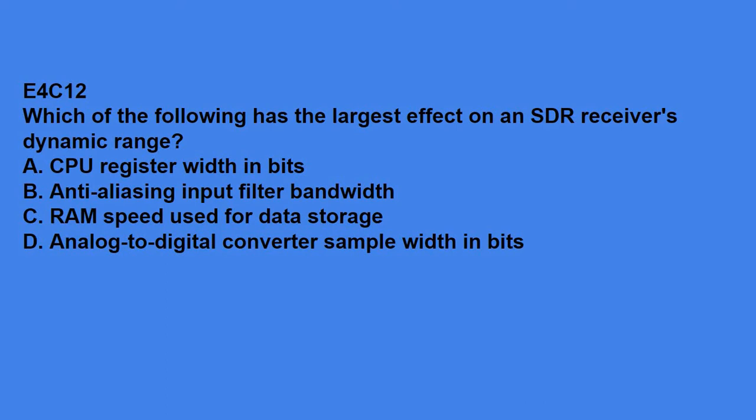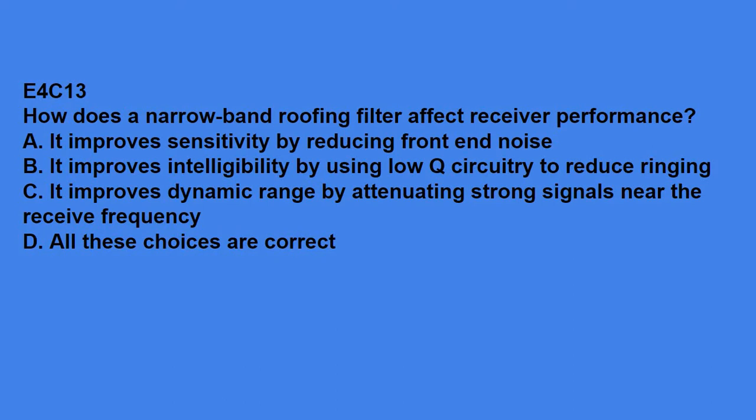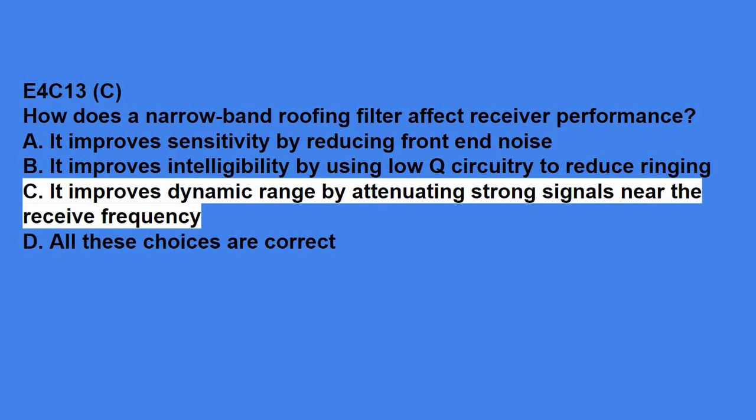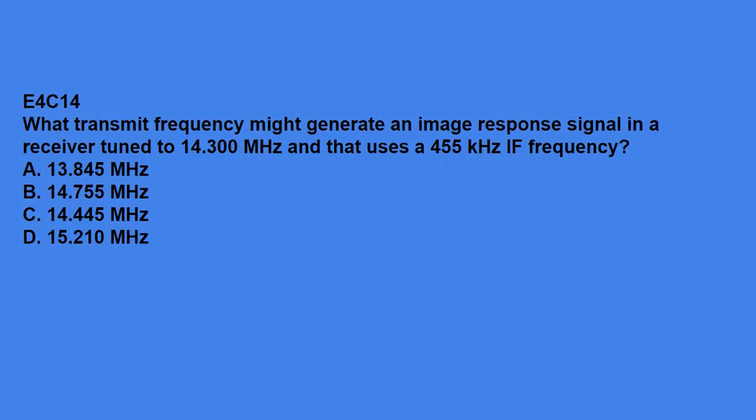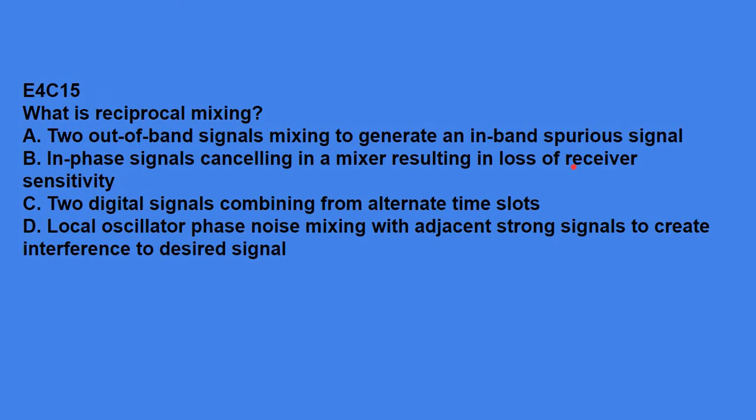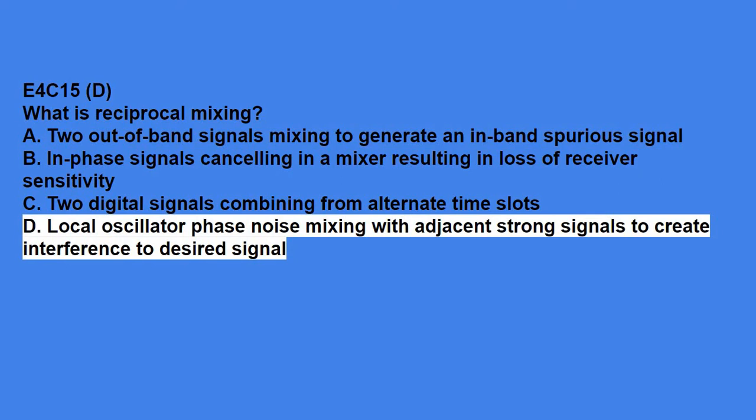E4C12, which of the following has the greatest effect on an SDR receiver's dynamic range? Answer is, analog-to-digital converter sample width in bits. E4C13, how does a narrow-band roofing filter affect receiver performance? Answer is, it improves dynamic range by attenuating strong signals near the receiver frequency. E4C14, what transmit frequency might generate an image response signal in a receiver tuned to 14.300 MHz and that uses a 455 kHz IF frequency? Answer is, 15.210 MHz. E4C15, what is reciprocal mixing? That is, local oscillator phase noise mixing with adjacent strong signals to create interference to a desired signal.